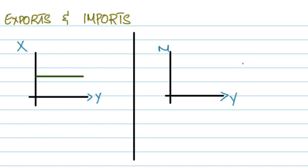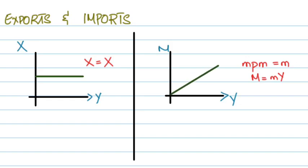So the marginal propensity to import, denoted simply by M. We said that exports do not depend on income, which is why X is simply equal to X. But imports depend on the spending decisions of domestic residents, which means that it depends on the national income, which means that M equals MY, where M is the marginal propensity to import — so whatever the income is, how much of that income will be used to purchase imported goods. So when Y equals 0, imports are also equal to 0, so this curve will look something like this.